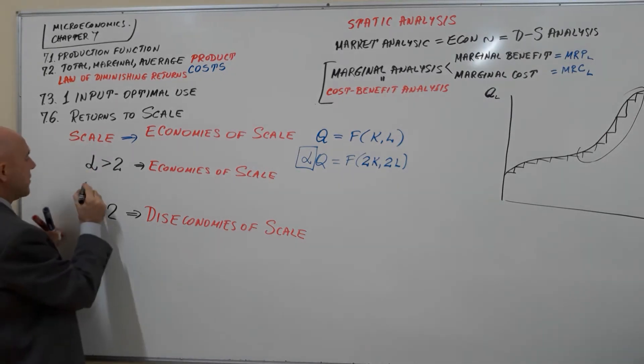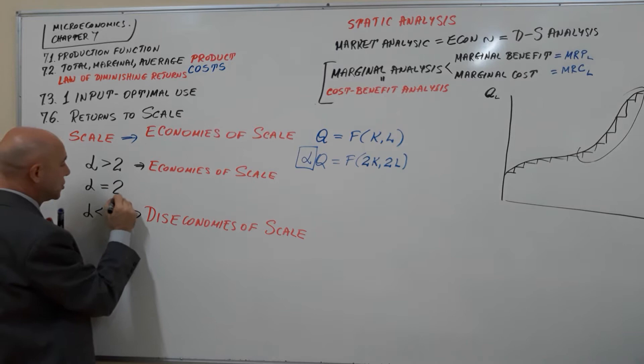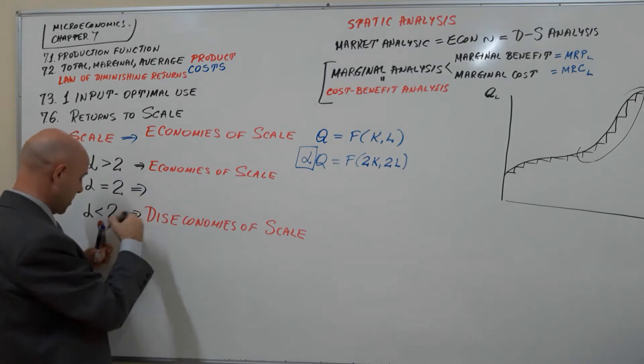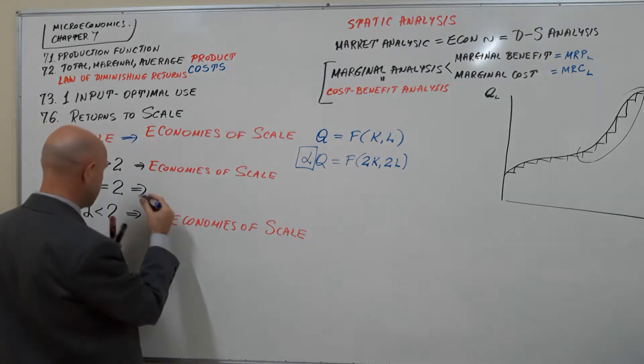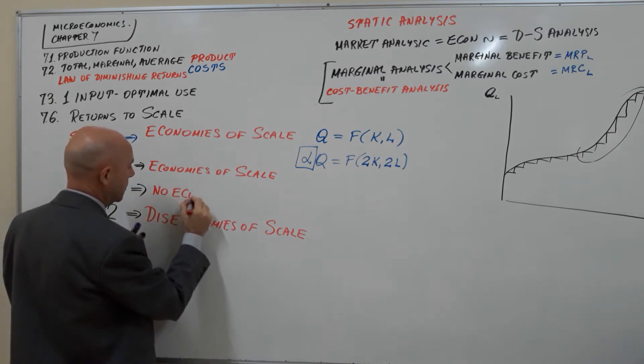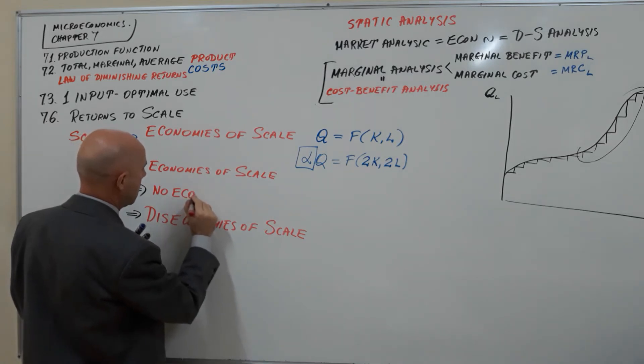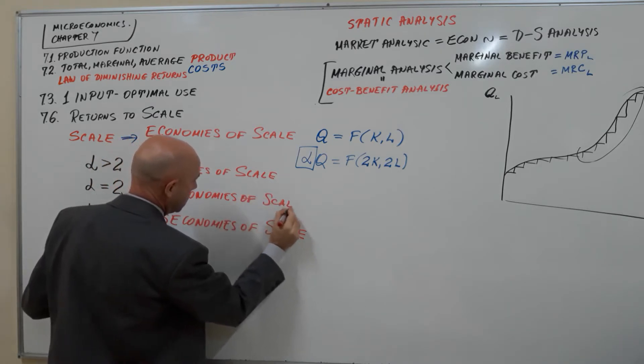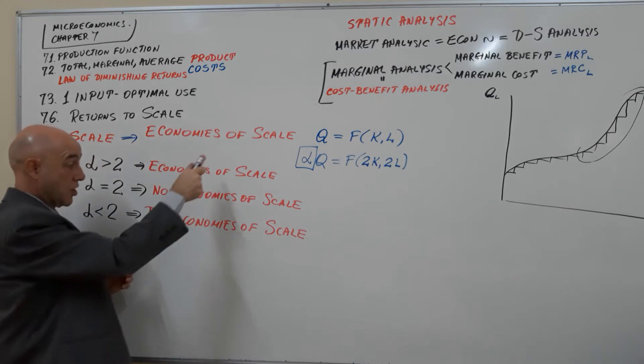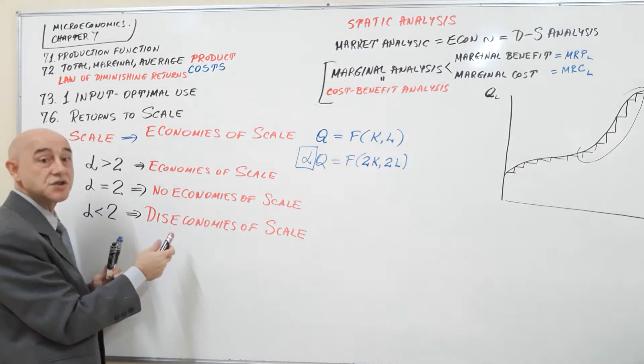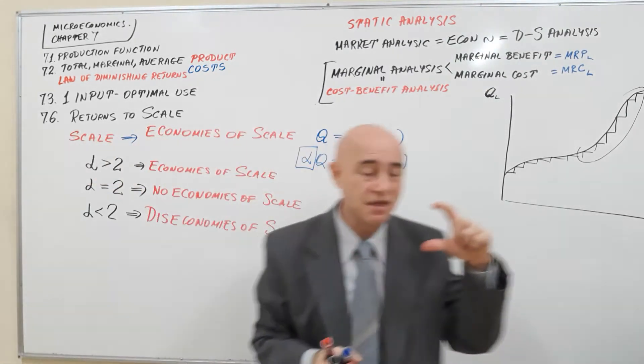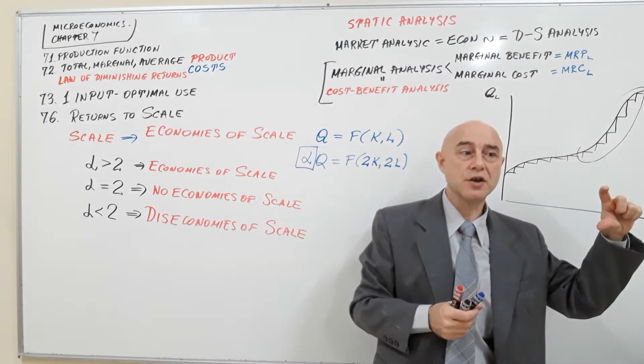And if alpha just happens to be two, you double input and then you double output. We say that you have no economies of scale. So you can have economies of scale, diseconomies means you don't even get the return on the input, and no economies of scale. You increase by 3% inputs, outputs will grow by 3%. You increase by 50%, outputs will grow by 50%.